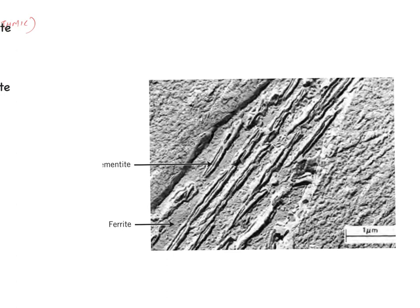What I have shown here is a single grain of bainite. The grain grows in a particular diagonal direction. You can see that cementite occurs in the form of needles or plates in a ferrite matrix — this is the kind of microstructure we will usually see in bainite. The natural next question is: at what temperatures and times should I control my process so that I arrive at a bainite microstructure?